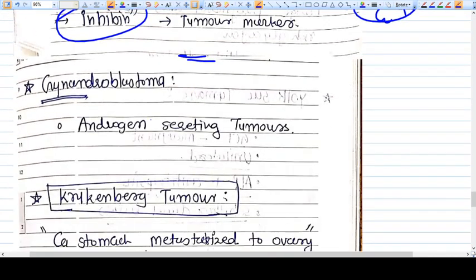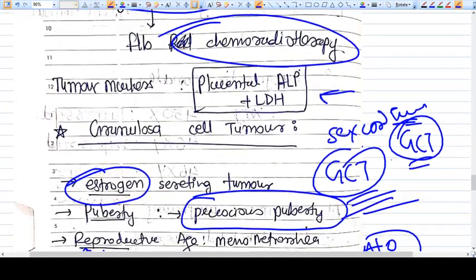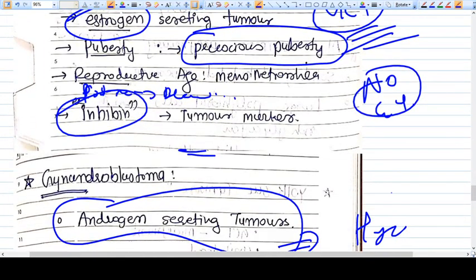Now comes gynandroblastoma, a tumor which secretes androgens. Androgens cause hyperandrogenic effects like hirsutism and deep voice. These tumors—granulosa cell tumor and gynandroblastoma—are sex cord tumors.